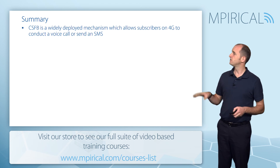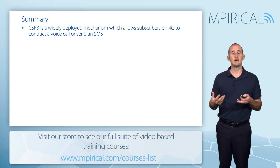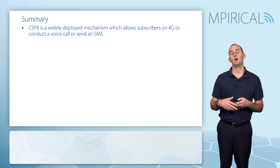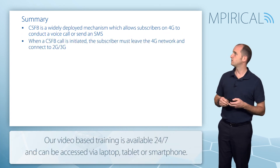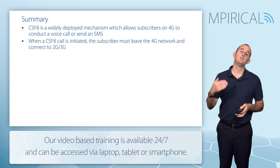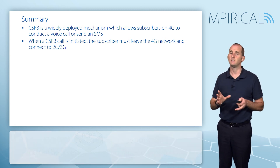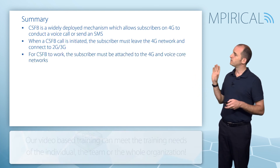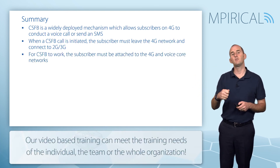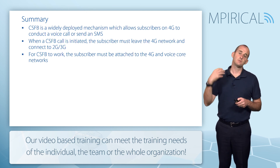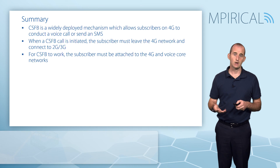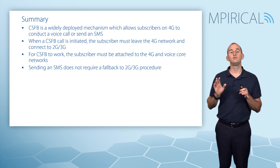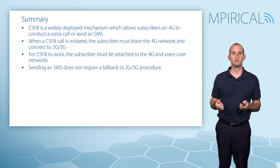In summary, circuit switch fallback is a widely deployed mechanism which allows subscribers on 4G to fall back to 2G or 3G and conduct a voice call. When a circuit switch fallback call is initiated, the 4G device must move back to 2G or 3G access. For circuit switch fallback to work, the subscriber must be attached to both the 4G network and the 2G/3G voice call network at the same time via a combined attach. Finally, sending an SMS does not require any fallback mechanism to 2G or 3G.